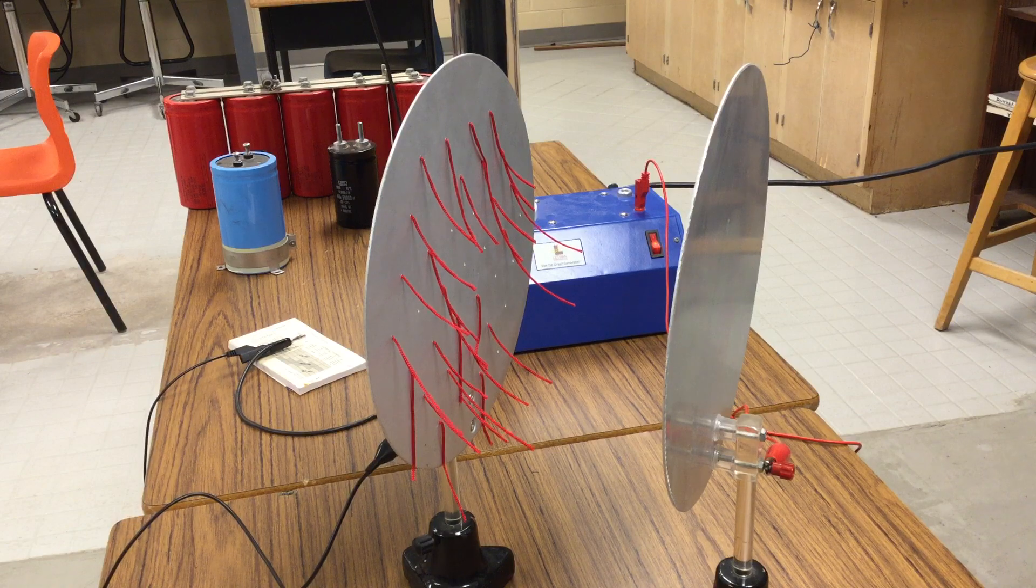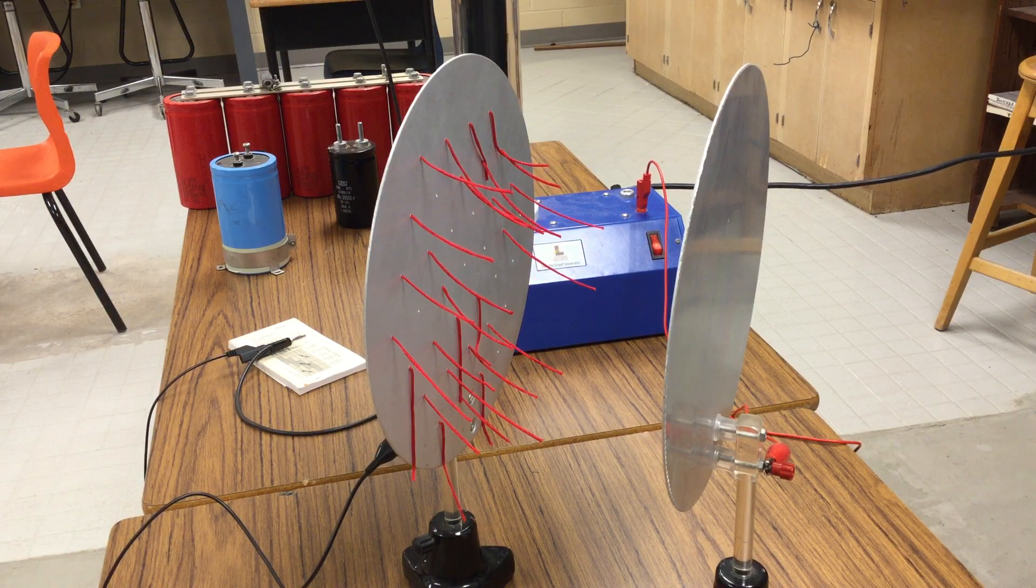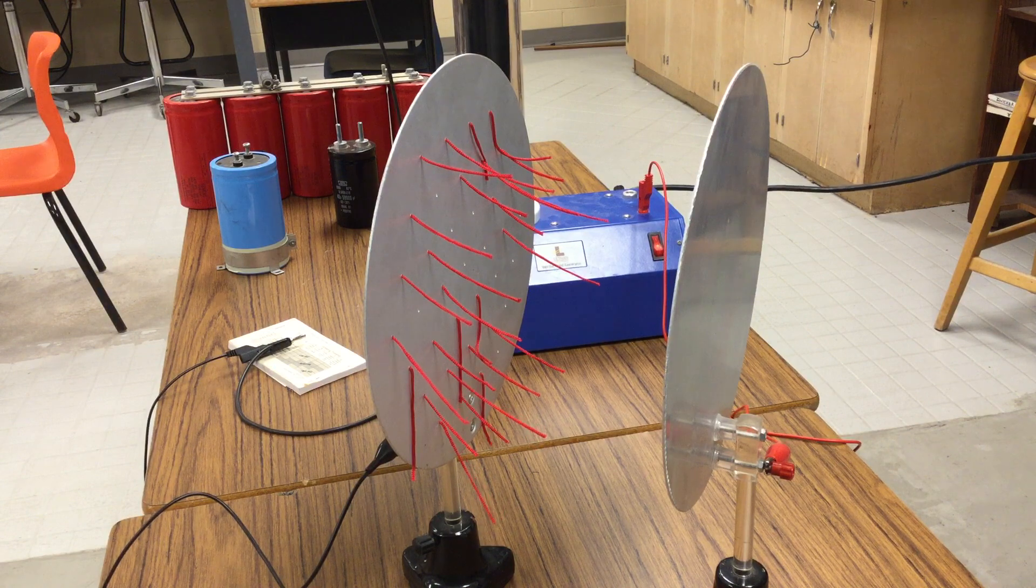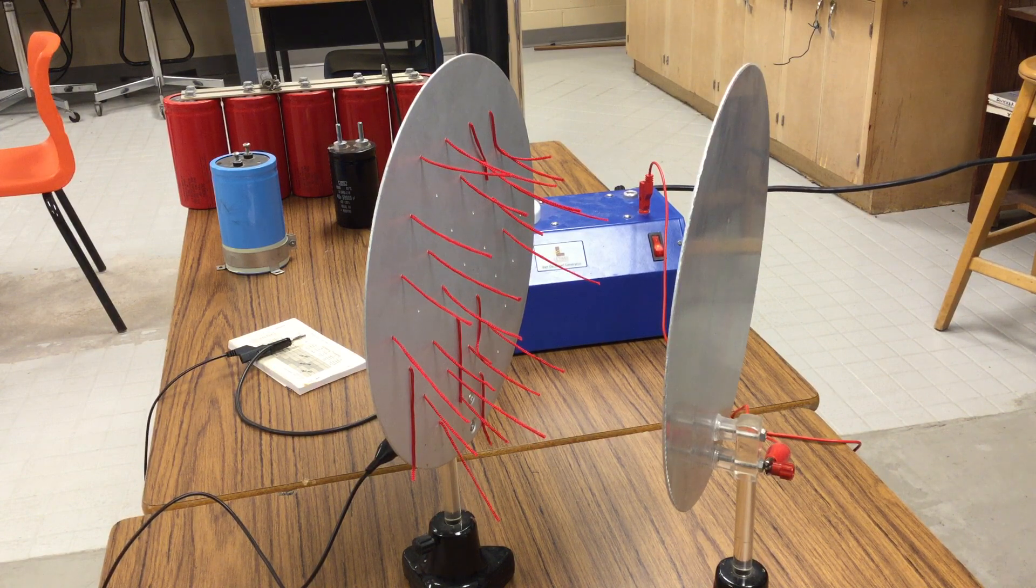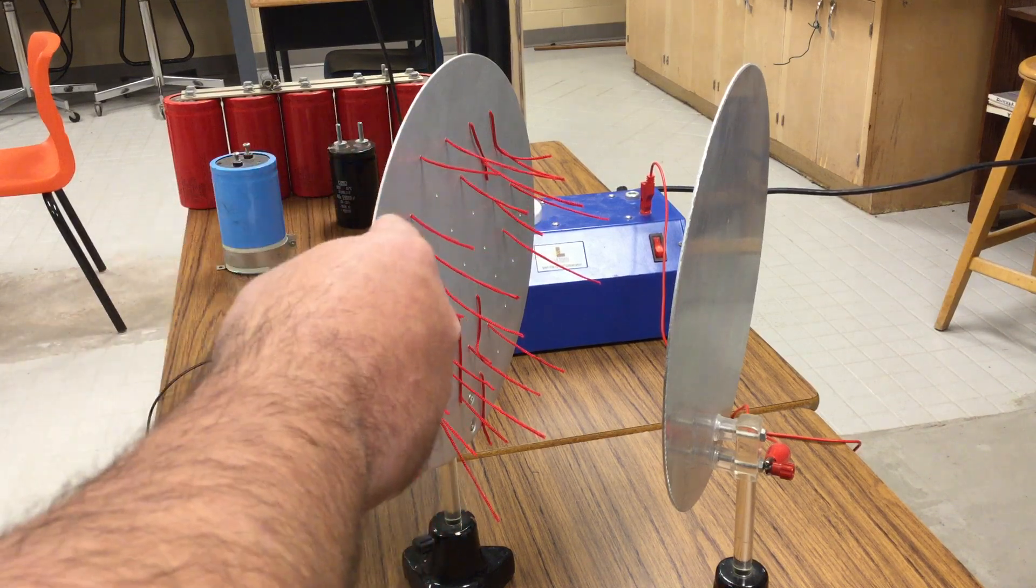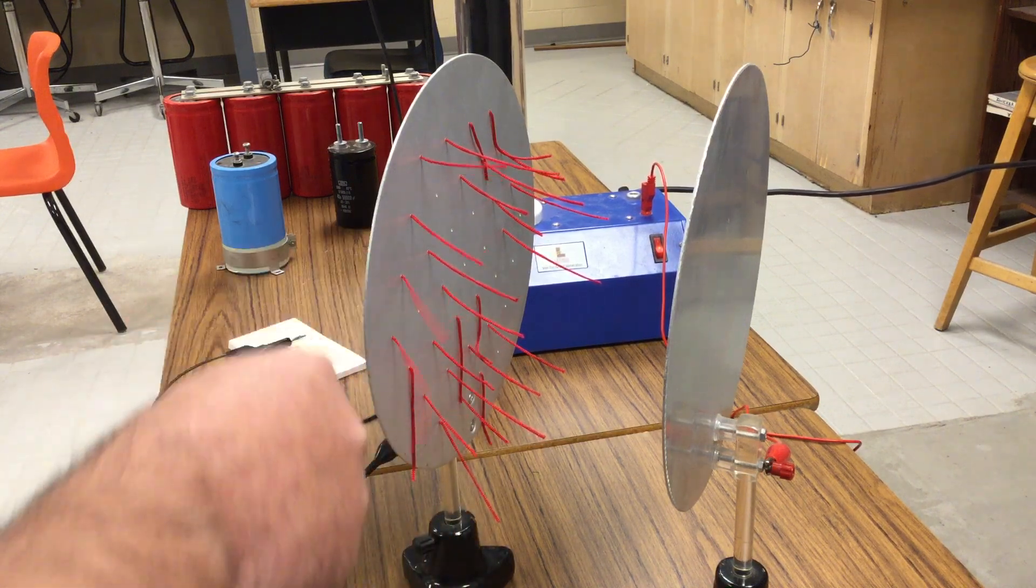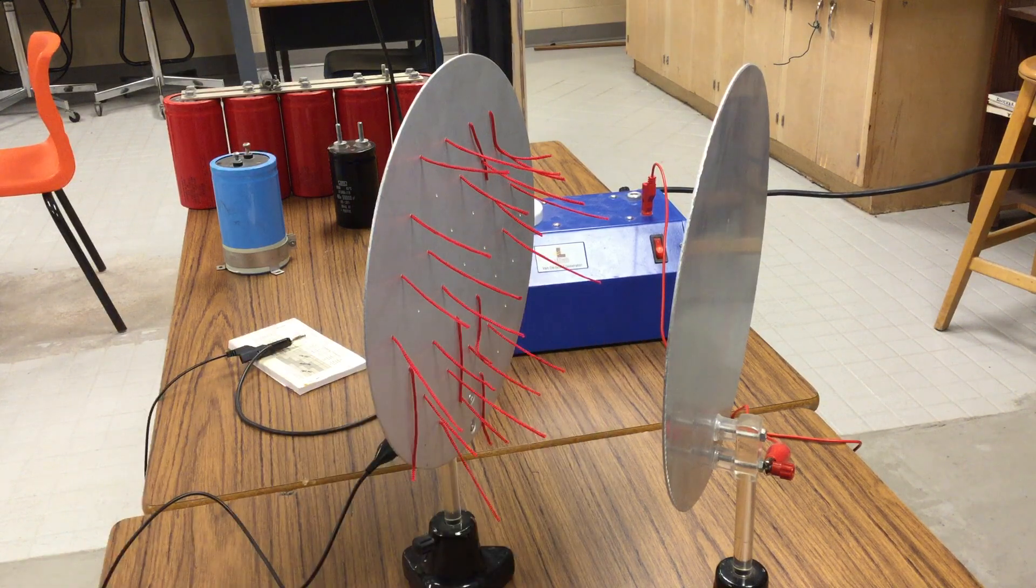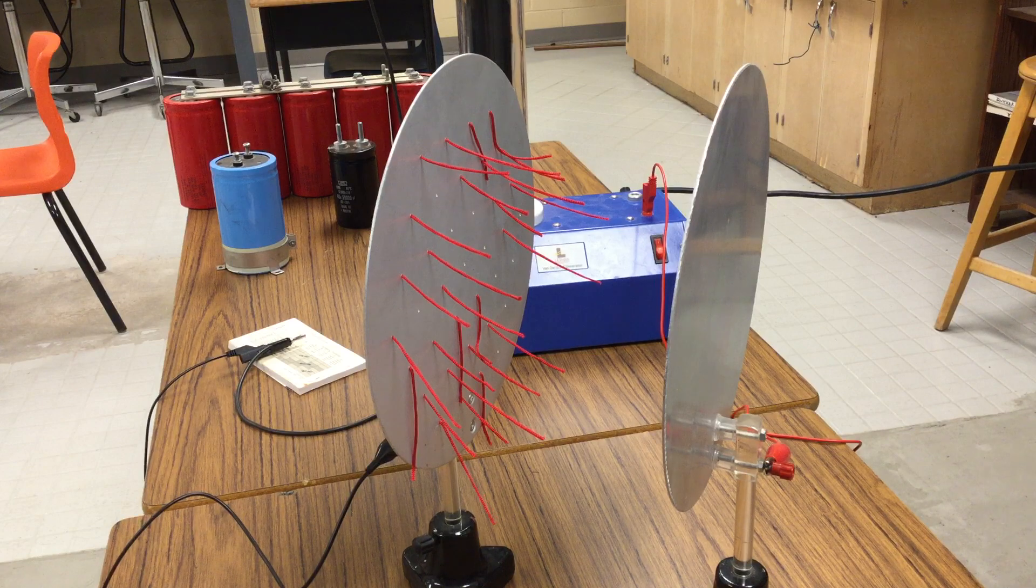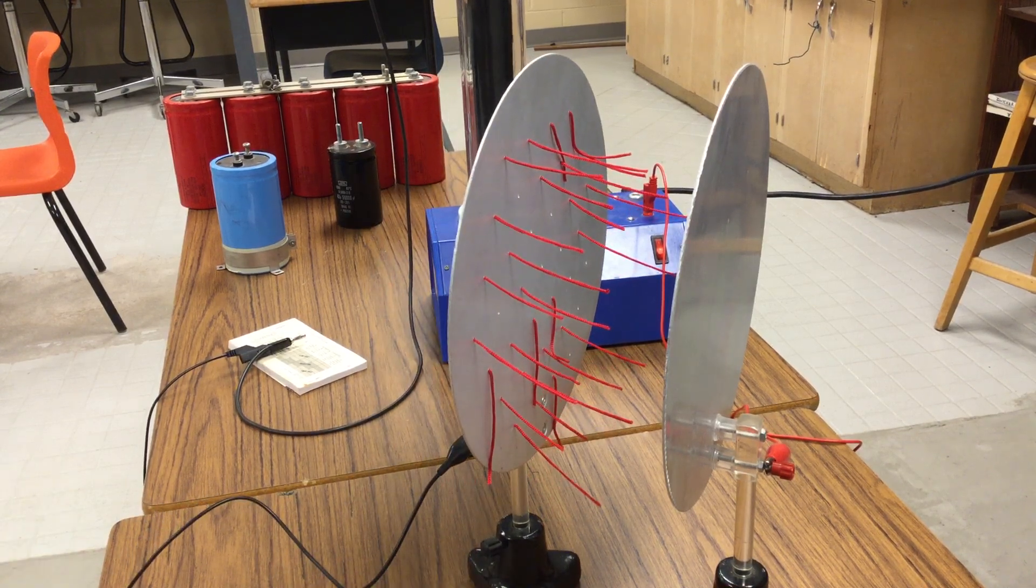As the static charge starts to build up in my Van de Graaff generator, you can slowly see the charge building up in my capacitor, which is simply two plates separated by some sort of insulator. In this case, the insulator is air. And as the charge builds up on one plate, the charge is actually building up on this one. The electrons here are attracted to the plate that is lacking charge there. And we can visually see that static charge or that force of attraction through our little silk strings.